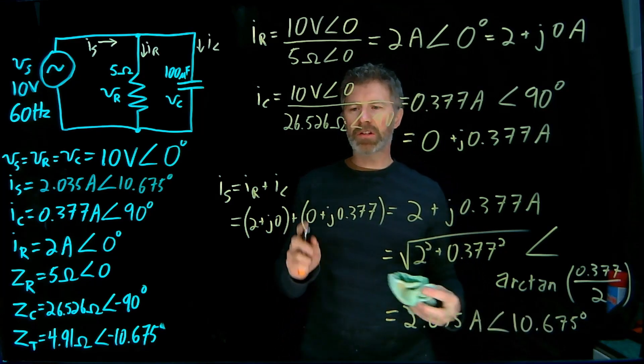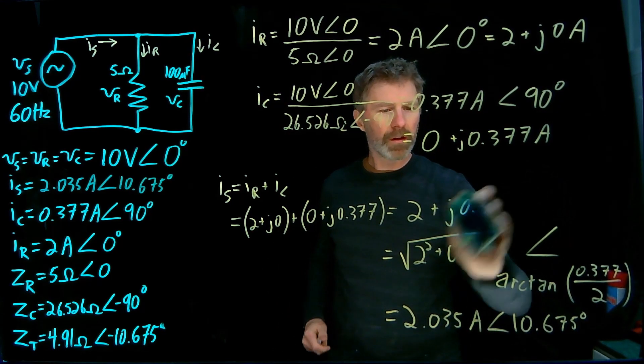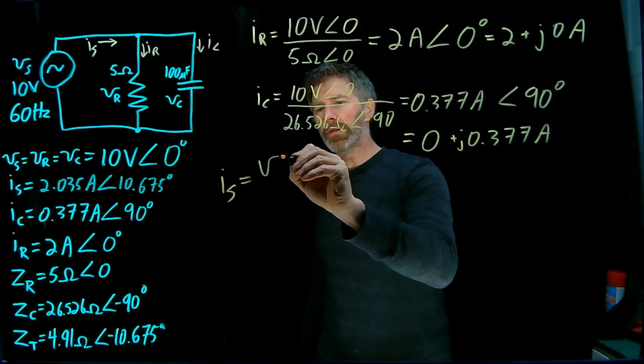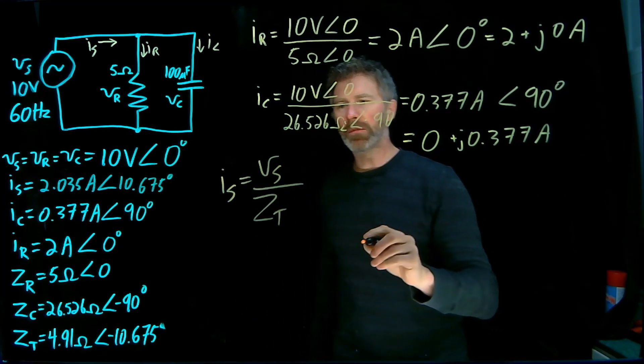Okay, now let's do this calculation with the other method. Current from the source is equal to the source voltage divided by the total impedance.